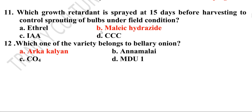Eleventh question: Which growth retardant is sprayed 15 days before harvesting to control sprouting of bulbs in field conditions in onion — ethyl, maleic hydrazide, IAA, or cyclocel? The correct answer is maleic hydrazide.